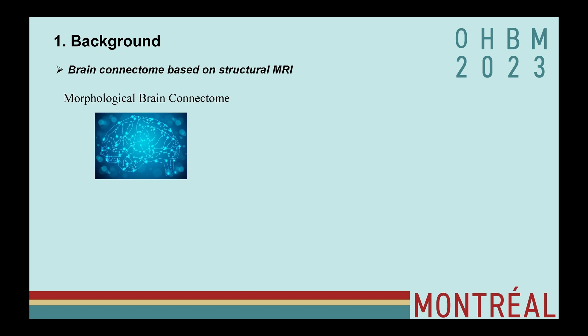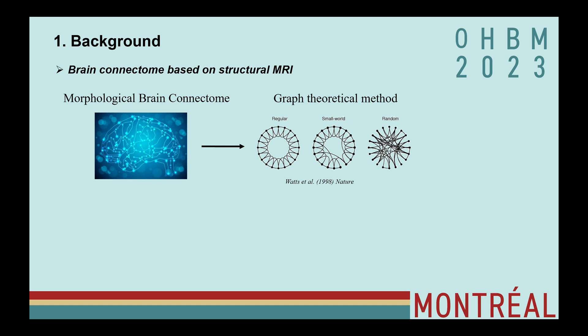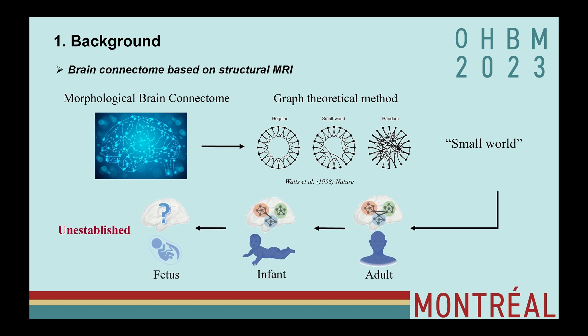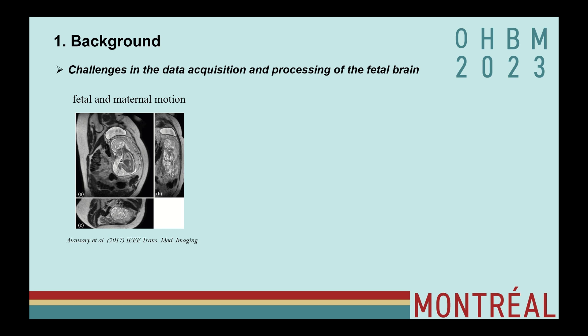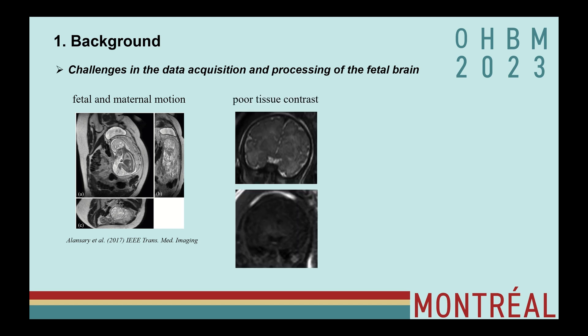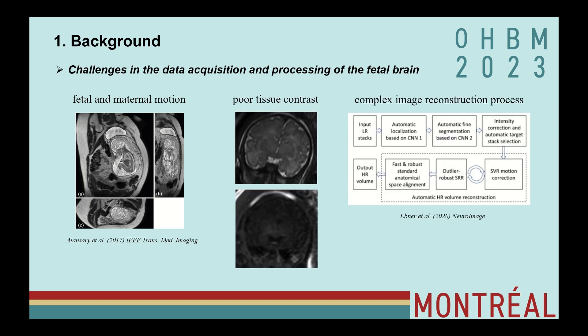MR-based morphological brain connectome provides a powerful tool for describing structural coherence at a network level. Based on graph theoretical measures, many studies revealed a small-world topology in the adult brain, especially in the infant brain. However, fetal morphological brain connectome has not been established, probably due to challenges in data acquisition and processing, like fetal and maternal motion, poor tissue contrast, and complex image reconstruction processes.